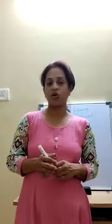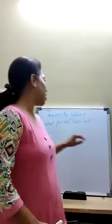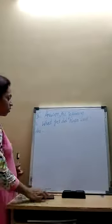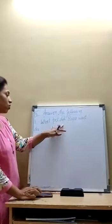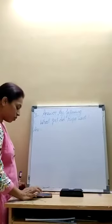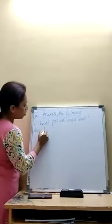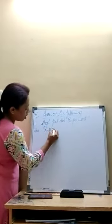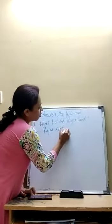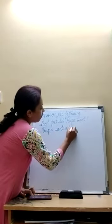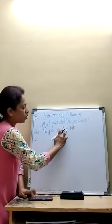After the lesson, we had written true or false. Today we will write the question answers. The first question is: What did Rupa want? The answer is: Rupa wanted a pet.